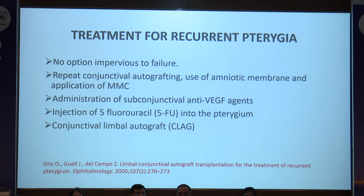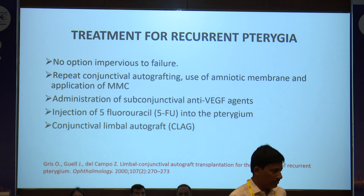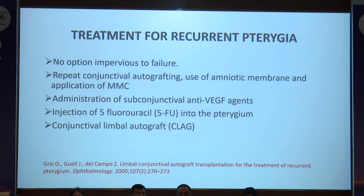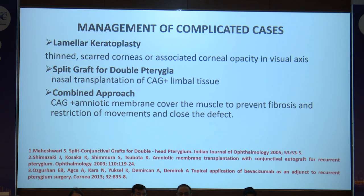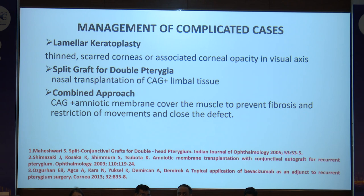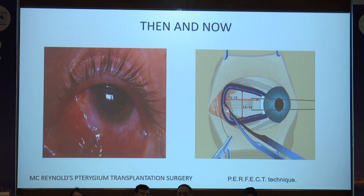Coming to the treatment of recurrent pterygium — no option is impervious to failure. Options include repeated conjunctival autograft, amniotic membrane, MMC application, anti-VEGF, 5-fluorouracil, and conjunctival limbal autograft, done by Del Campo in 2000. For complicated cases, lamellar keratoplasty is used in thin, scarred corneas or corneal opacity in the visual axis. A combined approach uses CAG with amniotic membrane over the muscle to prevent fibrosis and restriction of movements. From McReynolds' pterygium transplantation surgery, we have now evolved to the PERFECT surgery.